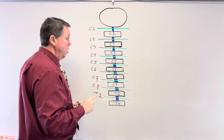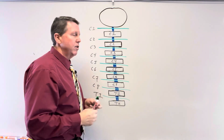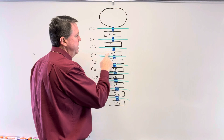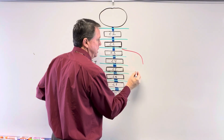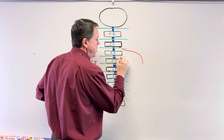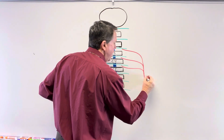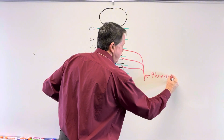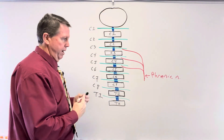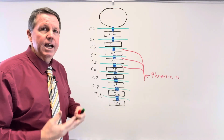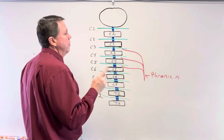Now let's talk about why some spinal cord injuries are fatal and others aren't. Coming from the C3 spinal nerve there's a branch, more from C4, and more from C5 — these branches together form the phrenic nerve. The phrenic nerve travels down and innervates the diaphragm. The diaphragm moves up and down to open up the thoracic cage so you can breathe.